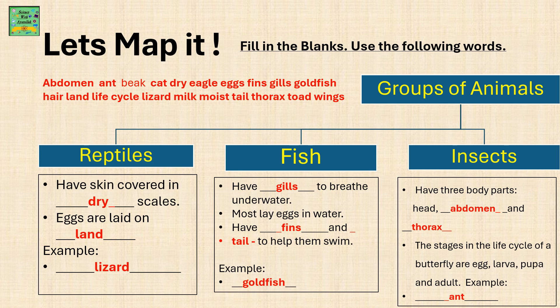Fish. They have gills to breathe underwater. Most lay eggs in water. They have fins and a tail to help them swim. An example is a goldfish.